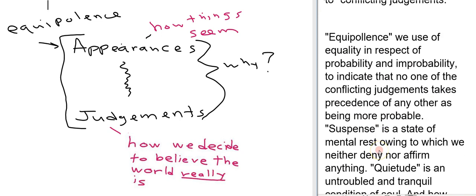And here he goes on to say what equipolence is. Equipolence we use of equality in respect of probability and improbability to indicate that no one of the conflicting judgments takes precedence over the other as being probable.